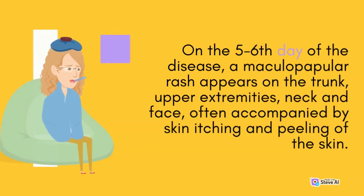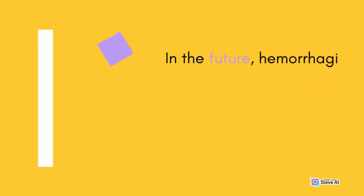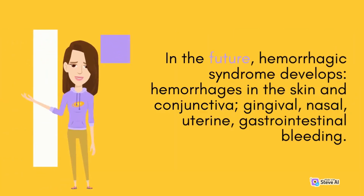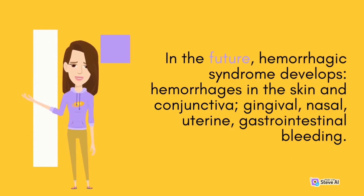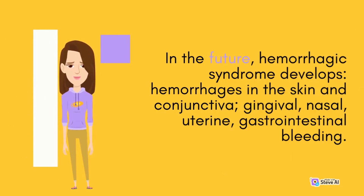On the fifth or sixth day of the disease, a maculopapular rash appears on the trunk, upper extremities, neck and face, often accompanied by skin itching and peeling. Subsequently, hemorrhagic syndrome develops with hemorrhages in the skin and conjunctiva, and gingival, nasal, uterine, and gastrointestinal bleeding.